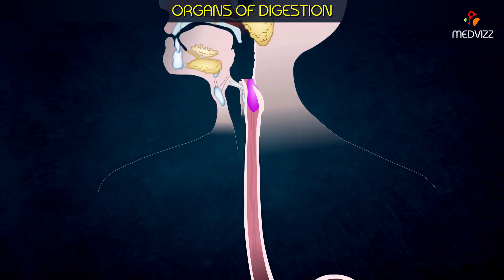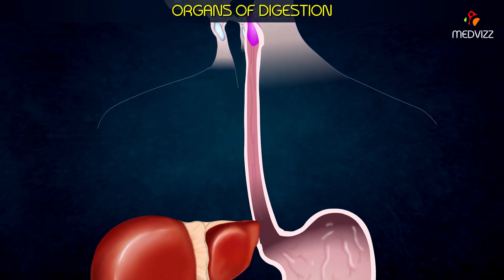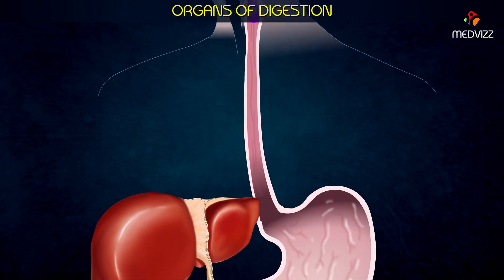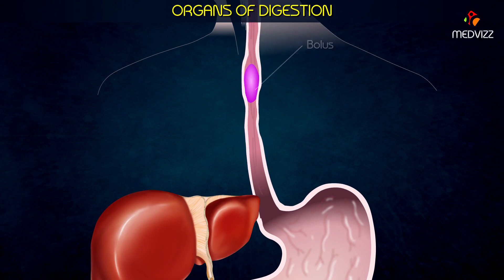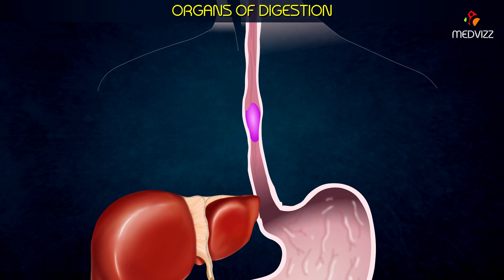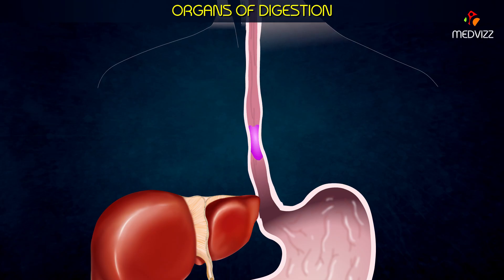The one-way movement of the food mass, now called a bolus, is controlled by wave-like involuntary muscle contractions. This movement is known as peristalsis.